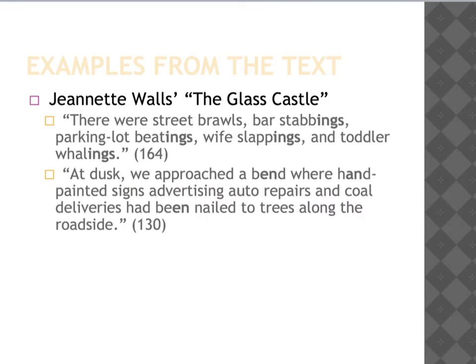Jeanette Walls uses a lot of alliteration because it shows emotion when she's describing either people, situations, or anything she sees. On page 164 she says: 'There were street brawls, bar stabbings, parking lot beatings, wife slappings, and toddler wailings.' She repeats the 'n' sound at the end of each different description of what she's seeing in a town.